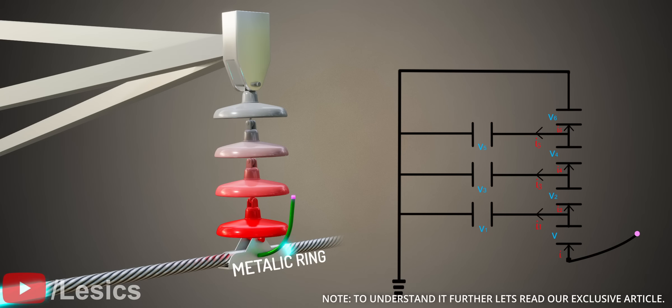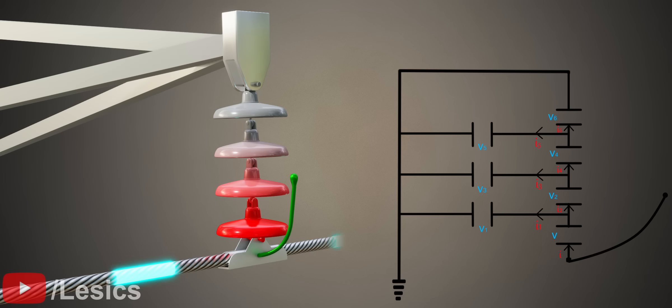Luckily, a simple metallic ring can negate this capacitance effect and the voltage issue. This ring forms another capacitor opposite to the shunt capacitor.